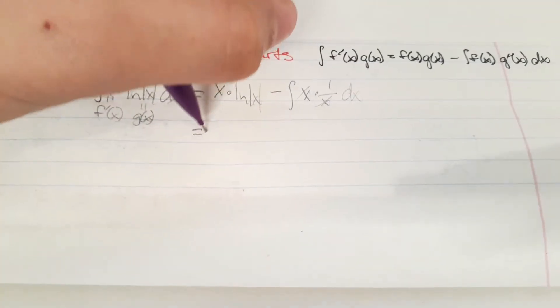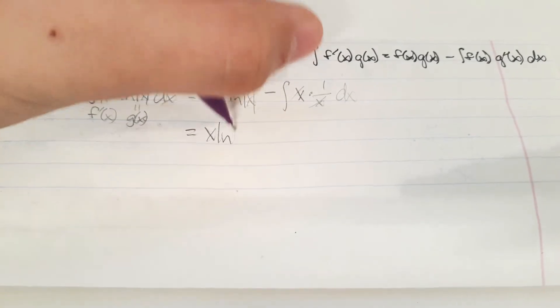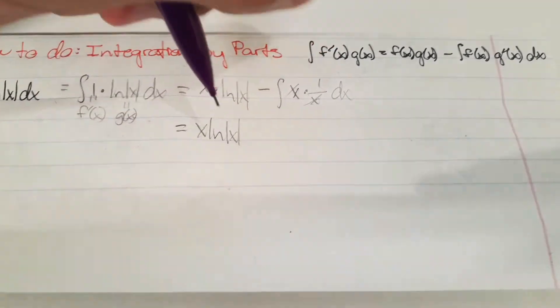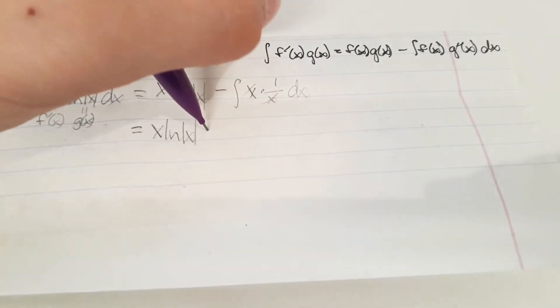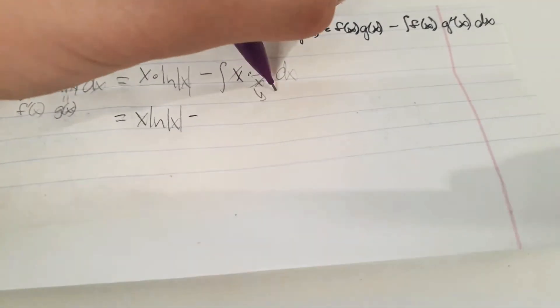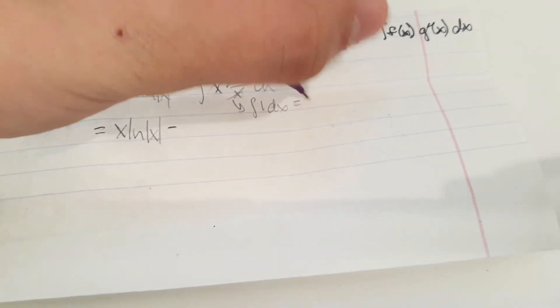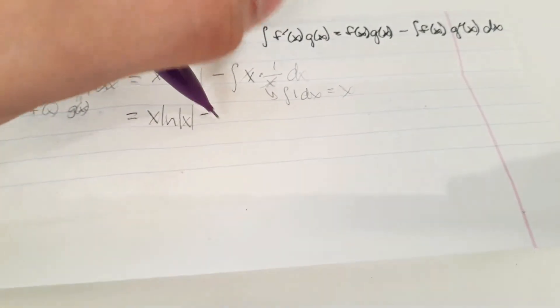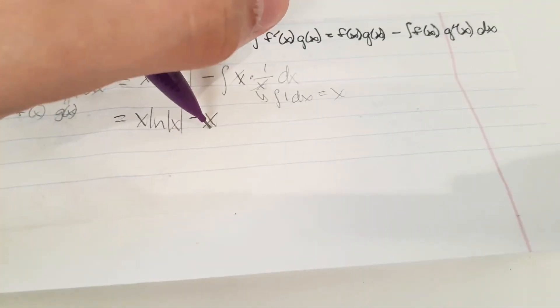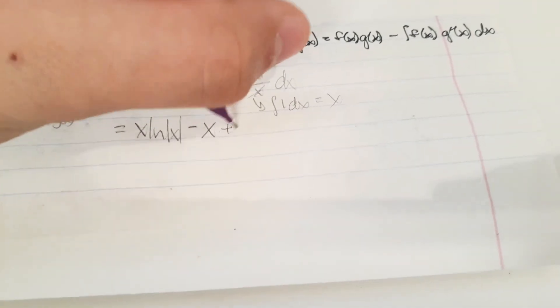So we are going to be left with x times the natural log of x minus - and I'm just going to write this over to the side - something's derivative equals 1, and the answer to that is obviously x. So, this right here is our answer.